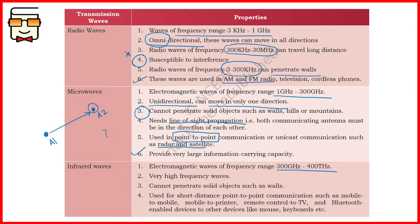The last wave type is infrared. A common example is the TV remote: when you press a button, infrared signals are sent to the television. You cannot see those signals because they are not in the visible range of the spectrum. The TV receives the signals and the channel changes or the volume adjusts. Infrared waves are very high frequency waves. Like microwaves, they cannot go through walls or solid objects, and they are mainly used for short-distance communication such as remote controls and Bluetooth-enabled devices.